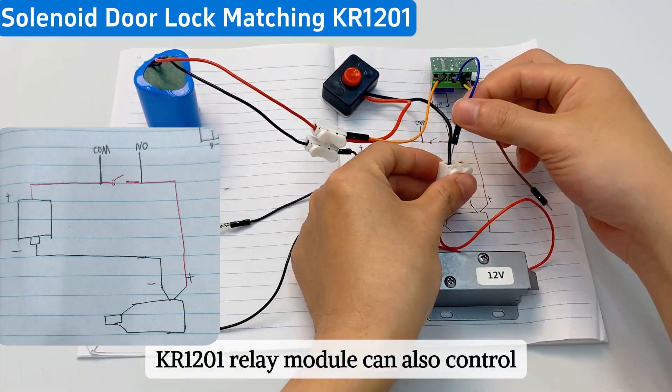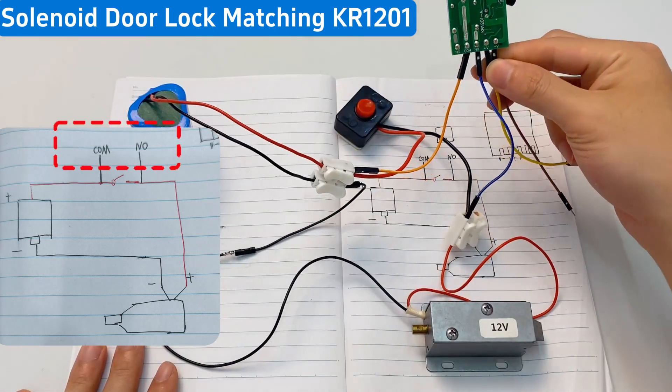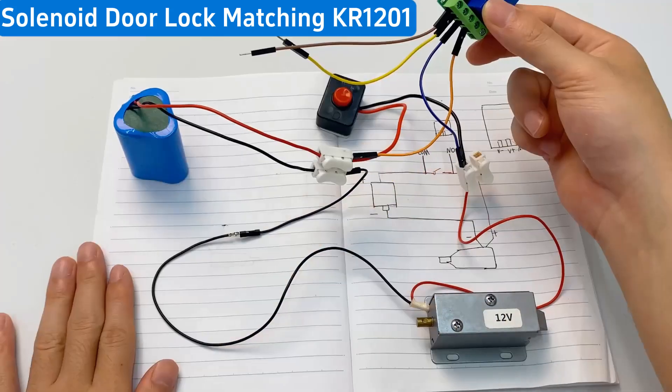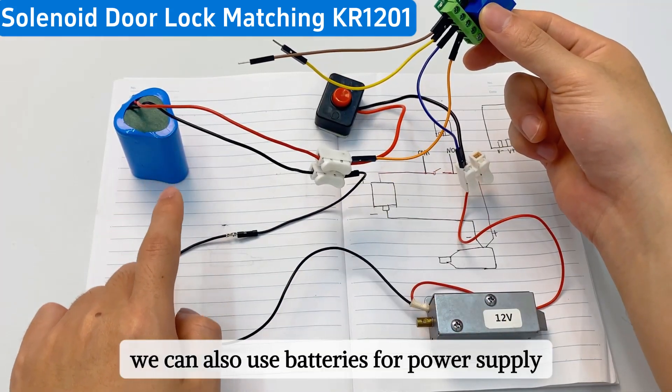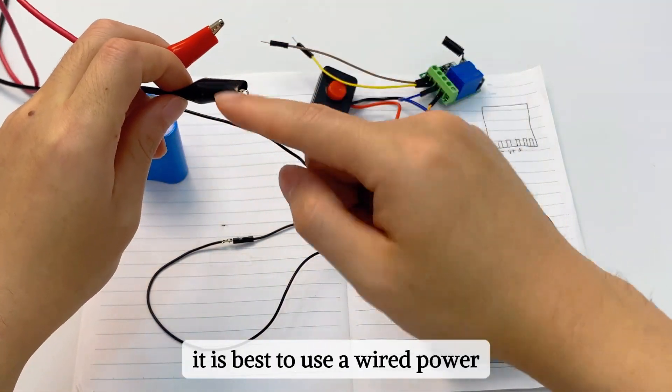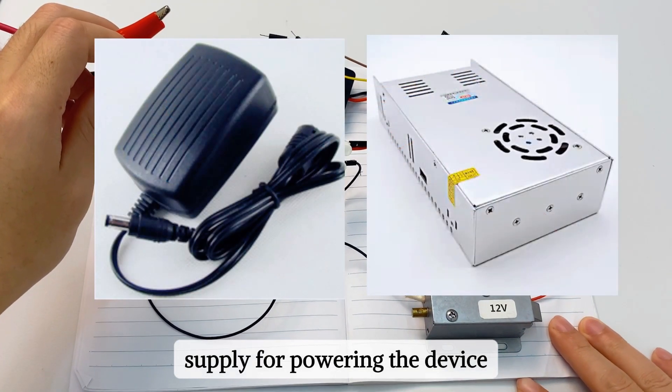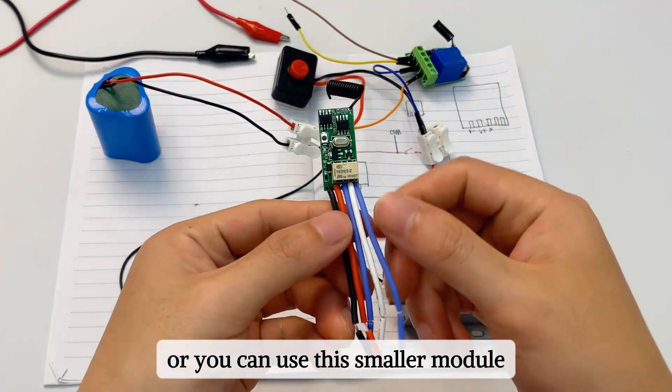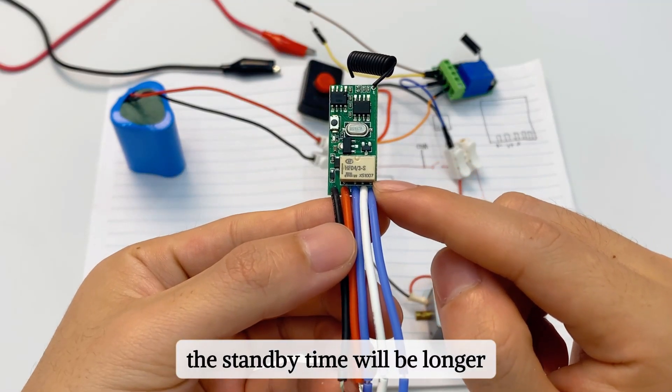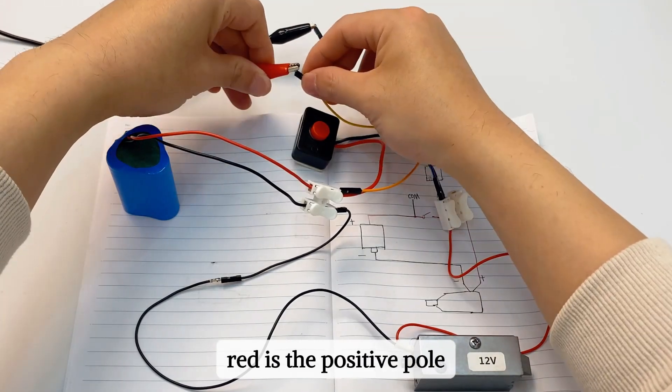KR1201 relay module can also control the on and off of the circuit. The rest is to power this module. We can also use batteries for power supply. But here I recommend everyone, it is best to use a wired power supply for powering the device. Or you can use this smaller module. The standby time will be longer. Black is the negative pole. Red is the positive pole.